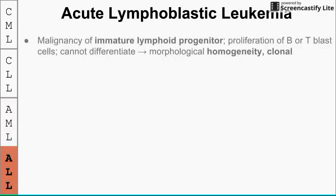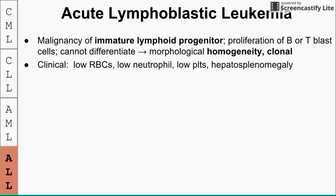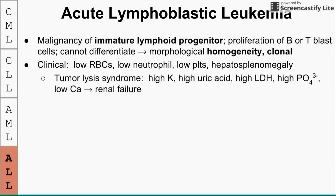Acute lymphoblastic leukemia is a malignancy of the lymphoid progenitor — similar to AML but on the lymphoid side. It produces either B or T blast cells that cannot differentiate; the disease is homogeneous and clonal. Clinically: anemia, low neutrophils, low platelets, and hepatosplenomegaly. A notable feature is tumor lysis syndrome, where many blood cells rupture and release potassium, uric acid, LDH, and phosphate (which binds calcium, causing hypocalcemia), and the resulting metabolic disturbance can lead to renal failure.